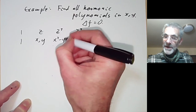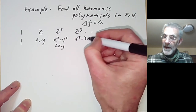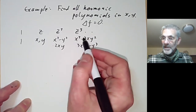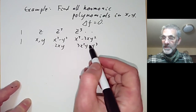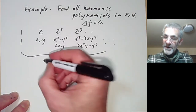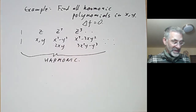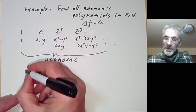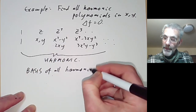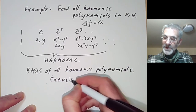From z² the real part is x² minus y² and the imaginary part is 2xy. From z³ the real part is x³ minus 3xy² and the imaginary part is 3x²y minus y³ — these coefficients are just binomial coefficients. We can go on like this, giving us lots of harmonic polynomials. Any linear combination of these is also harmonic, and they form a basis of all harmonic polynomials.